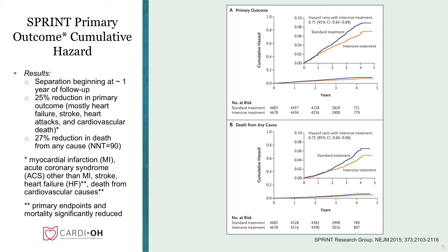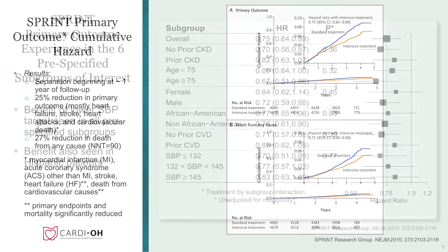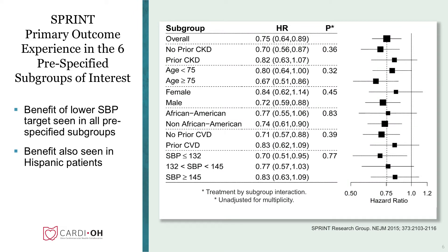In all of the pre-specified subgroups — including presence or absence of CKD, age above or below 75, male or female, African American or non-African American, presence or absence of cardiovascular disease at baseline, and three blood pressure tertiles at baseline — essentially all subgroups appeared to benefit from randomization to the less than 120 target versus less than 140. Benefit was also seen in Hispanic patients and those with or without metabolic syndrome. All of those subgroups benefited from a systolic blood pressure of less than 120 compared to those randomized to less than 140.